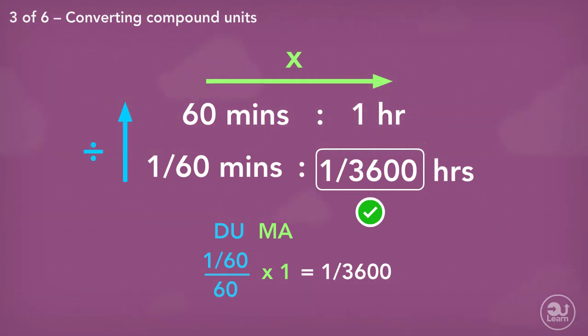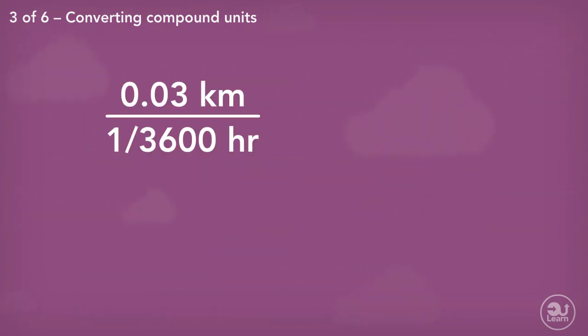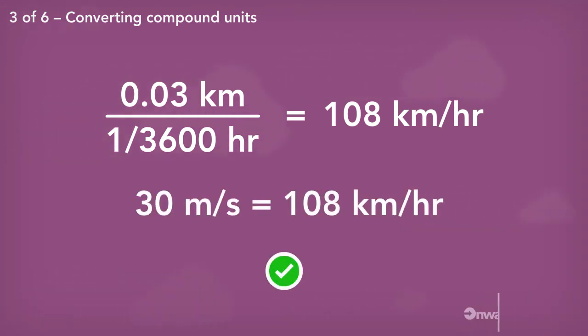What's left to do is to divide our values to get the final answer. So 0.03 divided by 1 over 3,600. That gives us the answer 108. Therefore, 30 meters per second is equivalent to 108 kilometers per hour. By converting both parts of the fraction, we're able to hone in on the final answer.